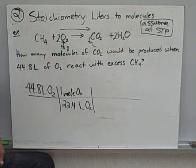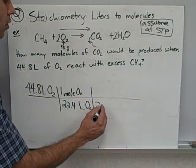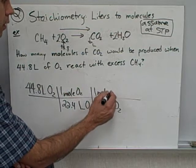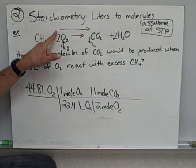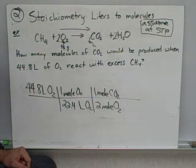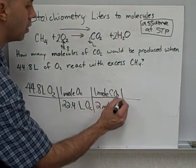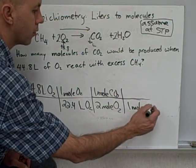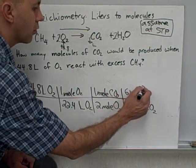My next step is use my mole ratio 2 to 1. I've got 2 moles of oxygen to 1 mole of CO2. If I stop here my answer is in moles of CO2. I don't want moles of CO2, I want molecules of CO2. So I keep on going. I know that 1 mole of anything will contain 6 times 10 to the 23 molecules.